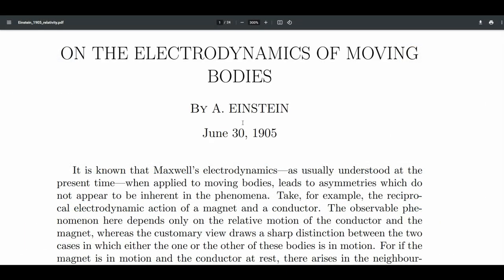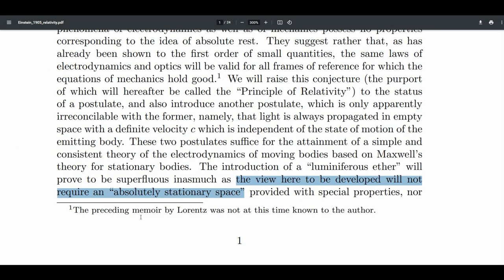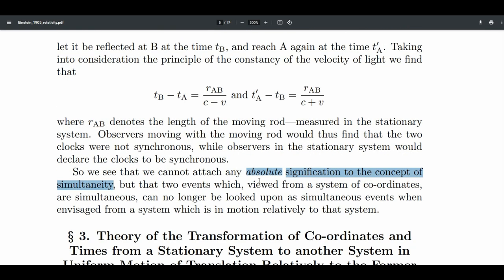In Einstein's 1905 paper, he gets rid of absolute space by saying it is not required, and he gets rid of absolute time by claiming that there's something called relative simultaneity.